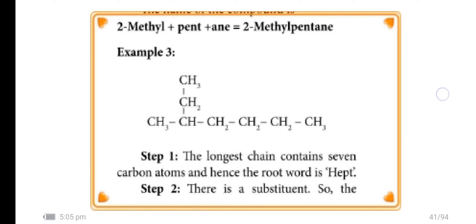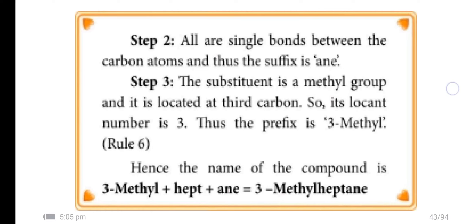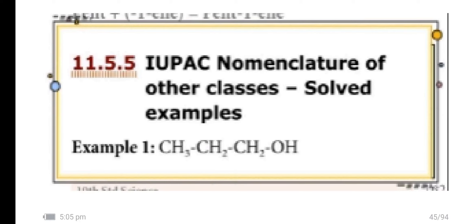Example 3: The longest chain contains 7 carbon atoms, so the root word is hept. All the single bonds between the carbon atoms, so the suffix is 'ane'. The substituent methyl group is located in the third carbon. So the locant number is 3, prefix is methyl. The name is 3-methylheptane.